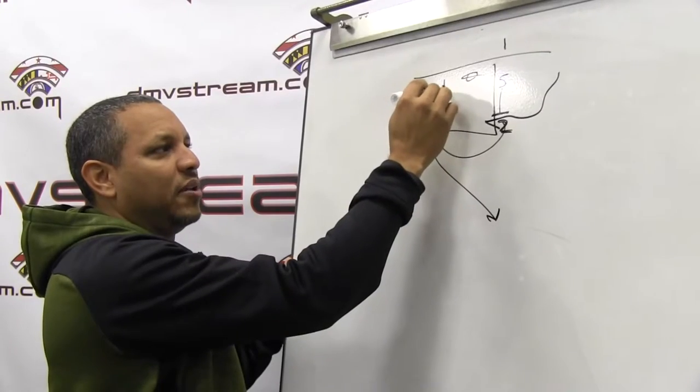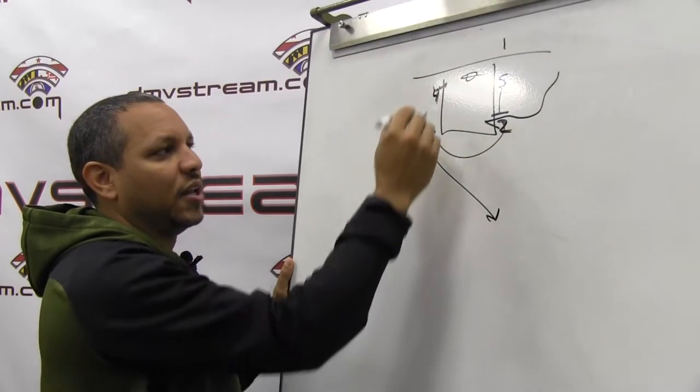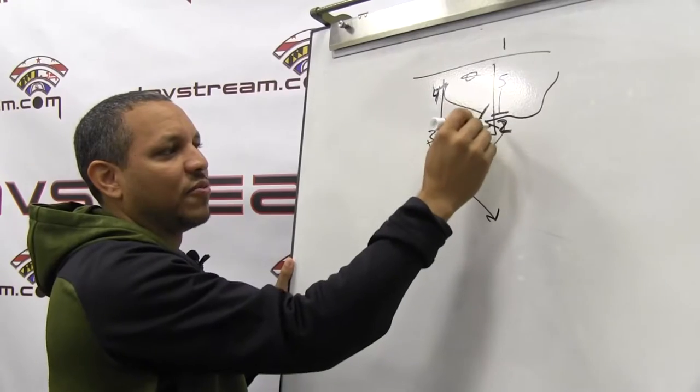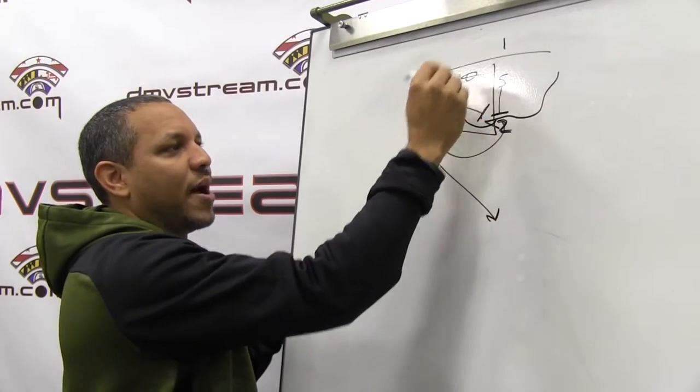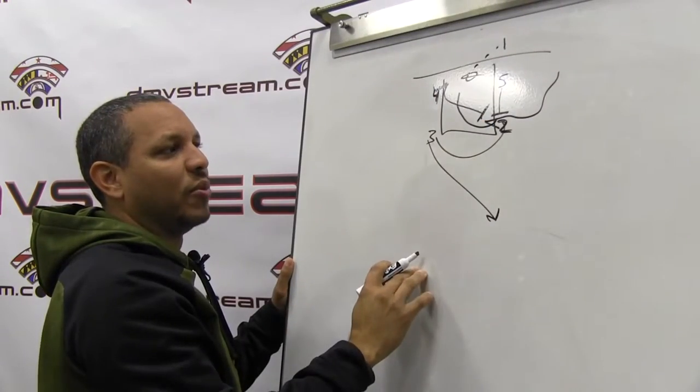So four is going to pin his man right here, 1,001, 1,002. He doesn't get it. He's going to now reverse up the screen for five. Five is going to screen and roll to the basket. We should have him wide open there.